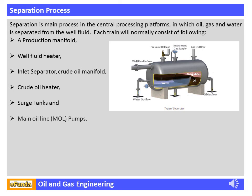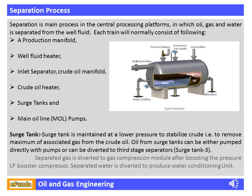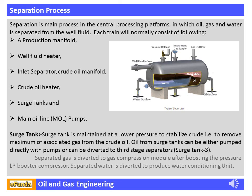Each train will normally consist of the following: a production manifold, well fluid heater, inlet separator, crude oil manifold, crude oil heater, surge tank, and main oil line (MOL) pumps. The surge tank is maintained at lower pressure to stabilize the crude — that is, to remove the maximum associated gas from the crude oil. Oil from the surge tank can be either pumped directly with pumps or diverted to a third-stage separator. Separated crude oil is pumped with crude transfer pumps and MOL pumps to export trunk lines.